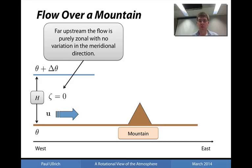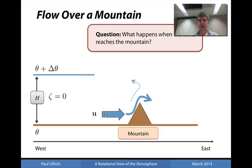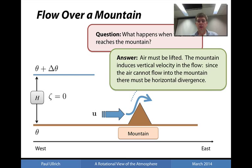The column height here will be denoted by capital H. So the question then becomes: what happens when this wind reaches the mountain? How is it modified when the topography is present? We know for one that flow cannot go into the surface, so the flow will act as an obstacle for the wind. Since the wind will be unable to go around the mountain in the north-south direction, the only option is that the wind will go over the mountaintop. So air must be lifted in this case. The mountain induces vertical velocity in the flow due to the fact that the wind cannot go into the mountain.